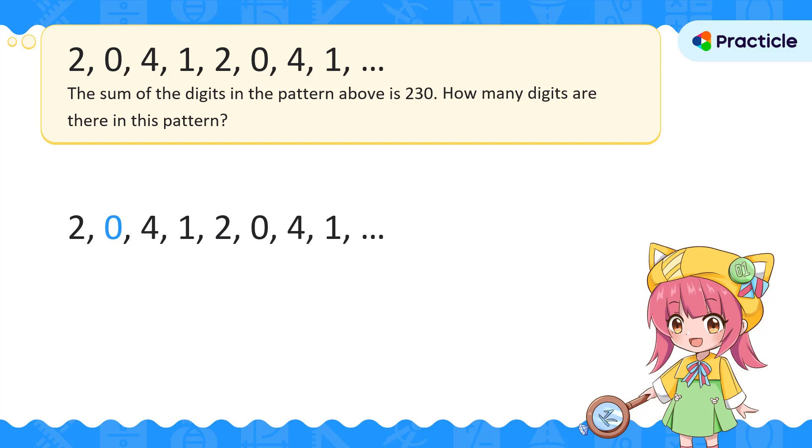2, 0, 4, 1. And then we see 2 again, 0, and guess what? The digits 4 and 1 come after these two digits, just like what we've seen earlier.